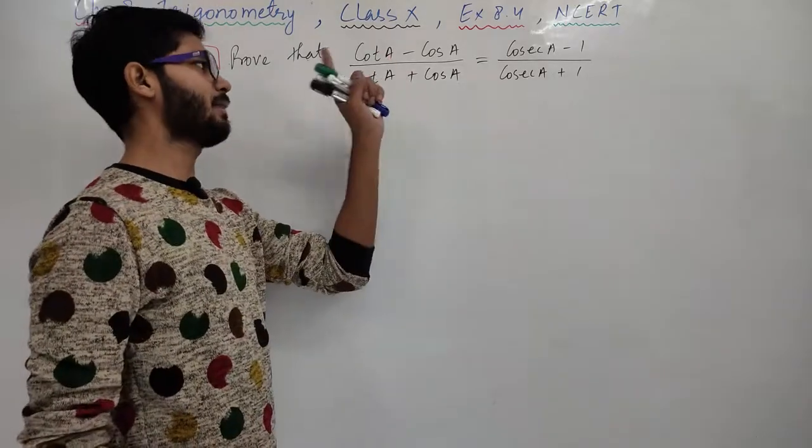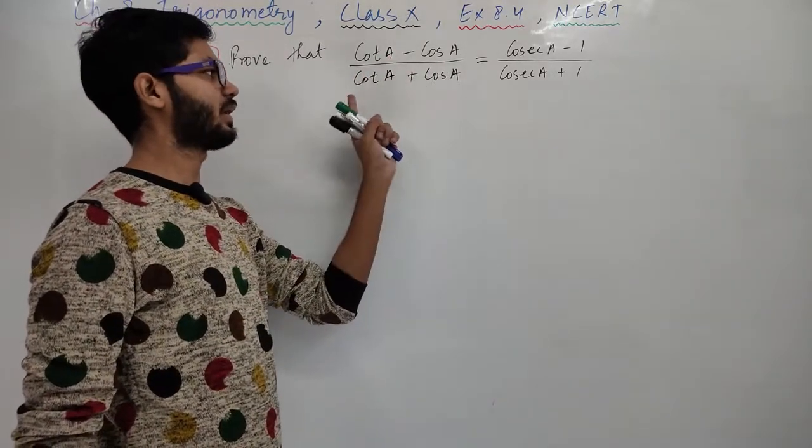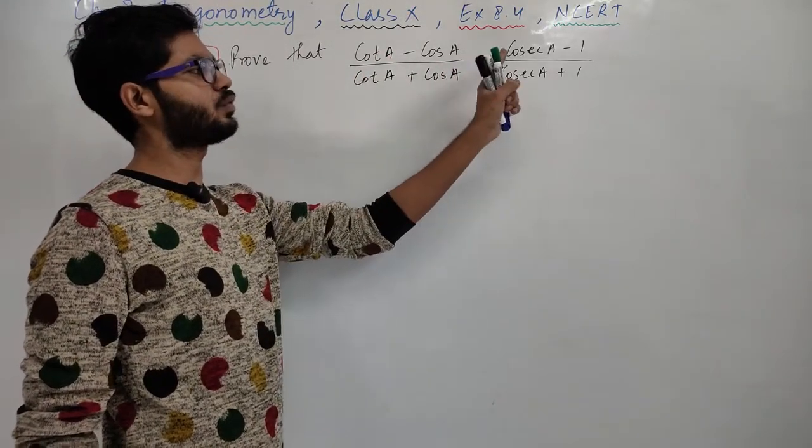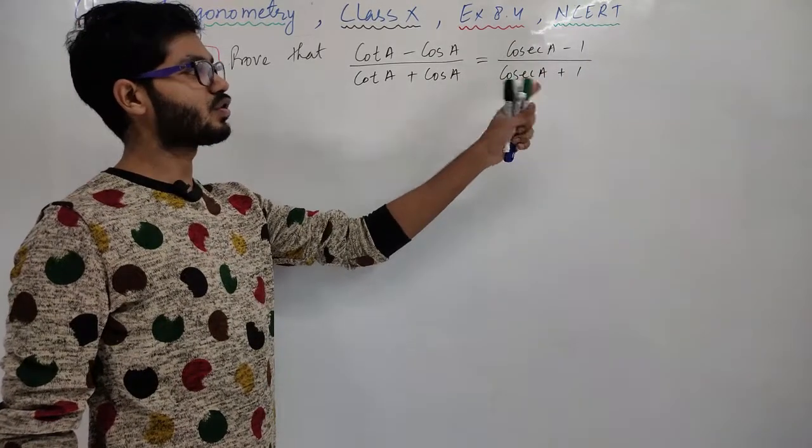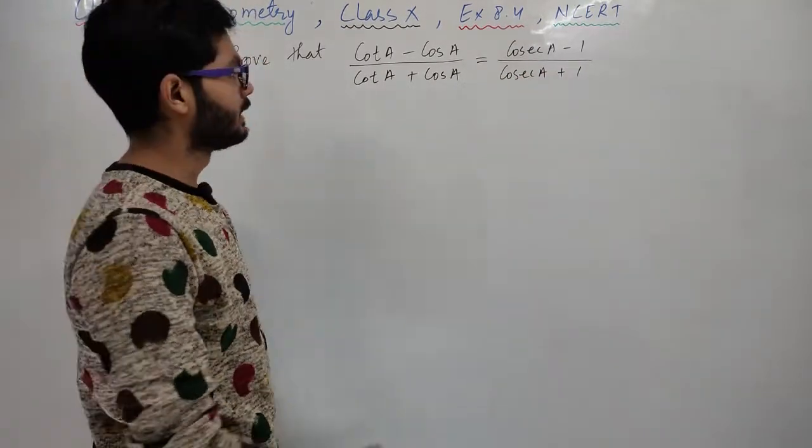Prove that cot A minus cos A divided by cot A plus cos A equals to cos A minus 1 over cos A plus 1. Look, first I told you in the last video that whenever such questions come, convert everything to sin or cos terms.